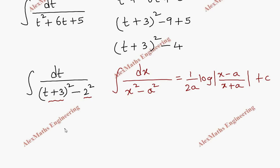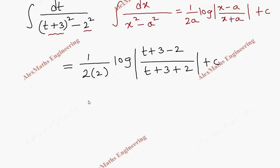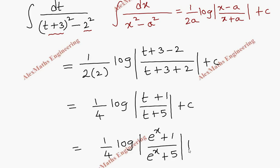We are going to substitute everything. So this will become 1 by 2a, a is 2. Log mod x, x is t plus 3, so t plus 3 minus a is 2, and x plus a, t plus 3 plus 2. And finally, we have this as 1 by 4 log mod t plus 1 by t plus 5 plus c. And we have to replace t which is nothing but e power x. So 1 by 4 log e power x plus 1 by e power x plus 5 plus c.